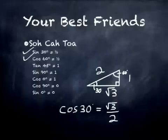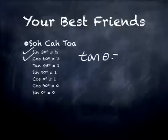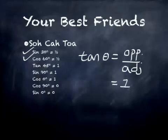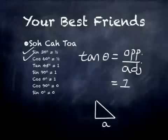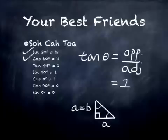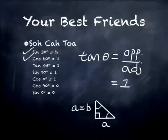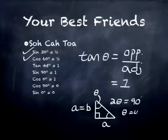Cosine of 30 degrees equals root 3 over 2. Tangent theta is opposite over adjacent. When the opposite and adjacent sides of a right triangle are equal, the ratio is 1. That means A equals B, so both non-right angles must be equal. Since the two angles must add up to 90 degrees and A equals B, each angle must be 45 degrees. Therefore, tangent of 45 degrees equals 1.